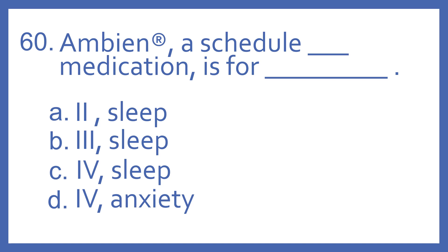Number 60. Ambien, a schedule blank medication, is for blank. A. Schedule 2 for sleep. B. Schedule 3 for sleep. C. Schedule 4 for sleep. Or D. Schedule 4 for anxiety.